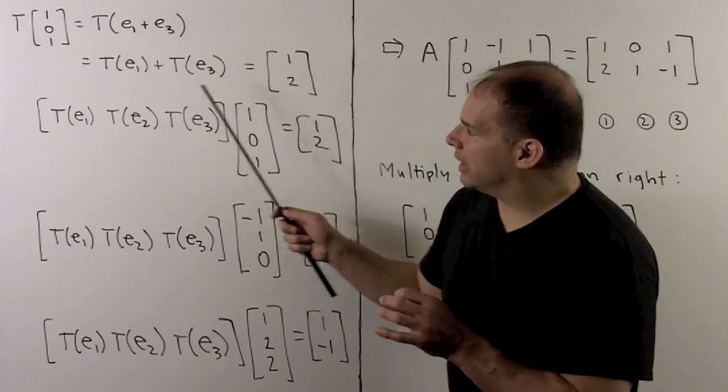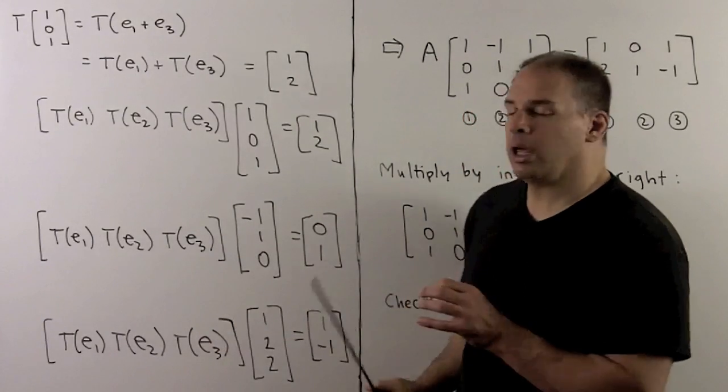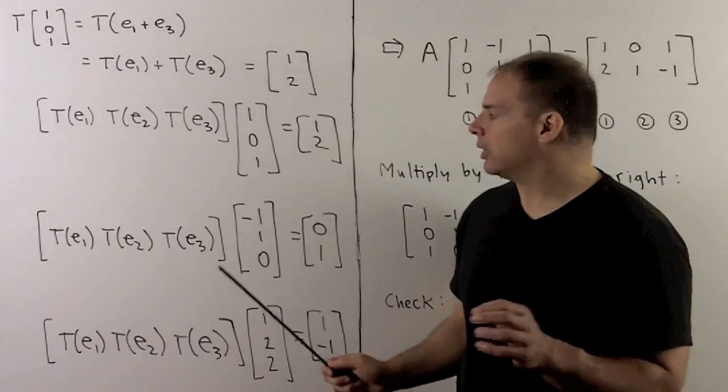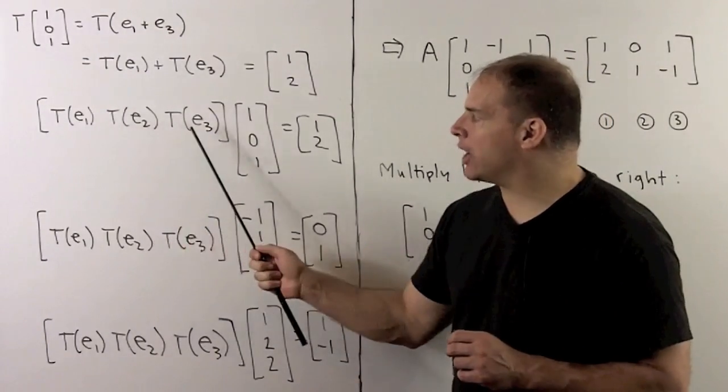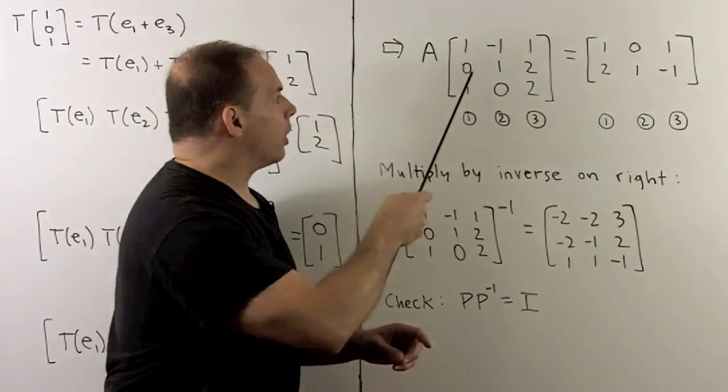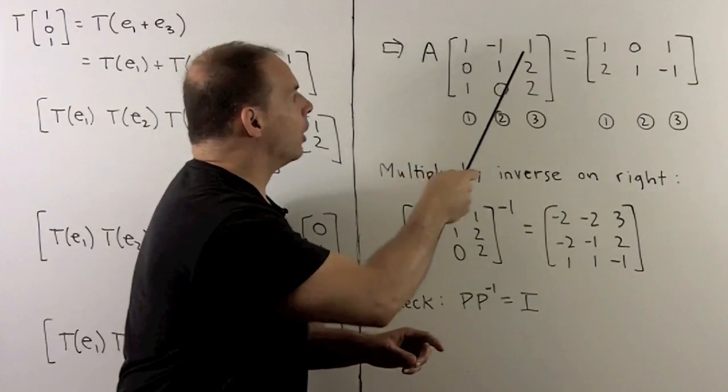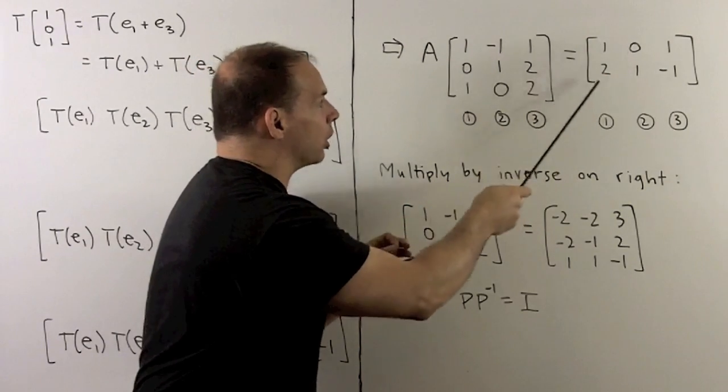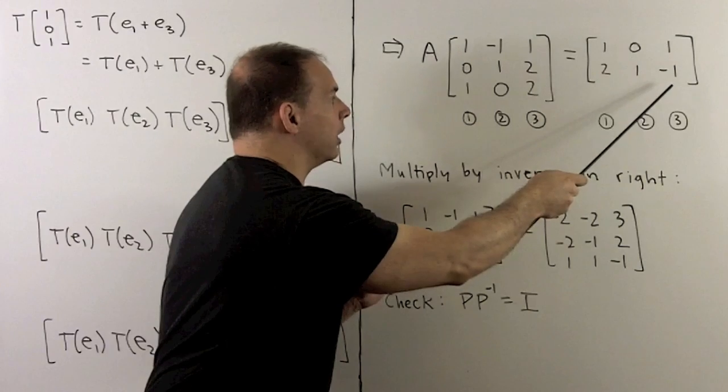I could take these three equations, put them into a single matrix product equation. Here what I'll have is our A matrix times the matrix with columns (1,0,1), (-1,1,0), and (1,2,2). Then we're just going to put the values in the same order: (1,2), (0,1), and (1,-1).